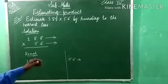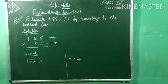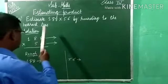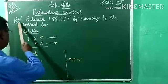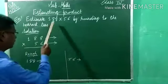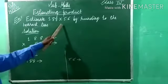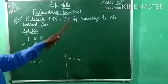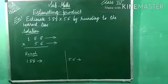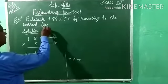Now today we will study estimating products. Example one: estimate 188 multiplied by 56 by rounding to the nearest 10s.